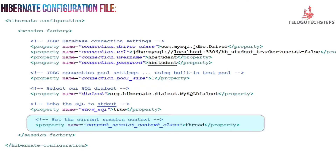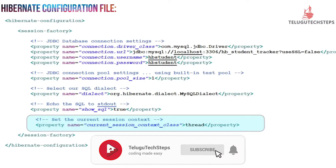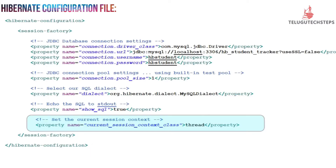This is the complete information regarding the Hibernate configuration file. So what we are going to do here is add the Hibernate configuration file. In the next video, I am going to explain how to add annotations in a Java class — we will add the annotations in the next class.